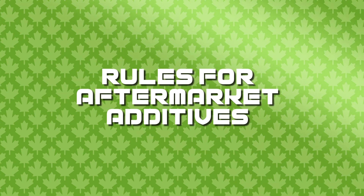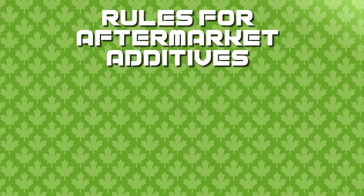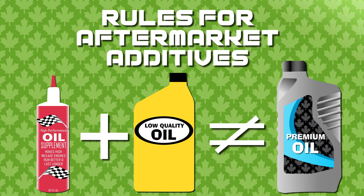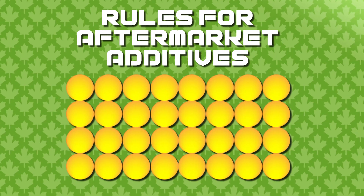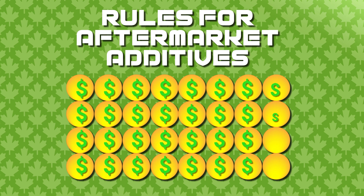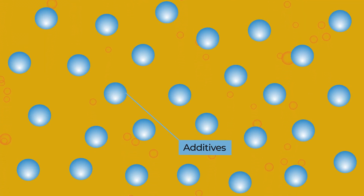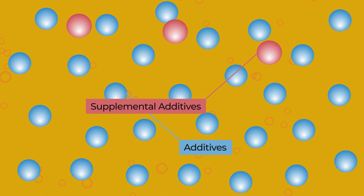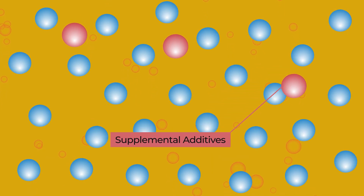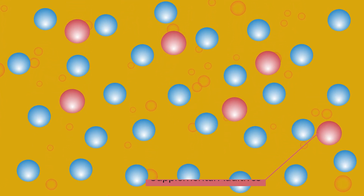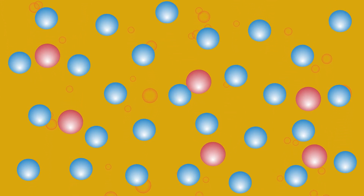Here are two general rules to remember when thinking about using aftermarket additives. First, a low-quality lubricant cannot be converted into a premium product simply by the inclusion of an additive. In the world of lubricants, you get what you pay for. This is part of the reason as to why synthetic oils are so expensive — they have been refined to such a high standard that they are some of the highest quality oils on the market. Secondly, base oils can only dissolve a certain number of additives. As a result, the addition of supplemental additives into an oil that has a low level of solubility, or is already saturated with other additives, may simply mean that the new additives will settle out of the solution and remain at the bottom of the crankcase or sump. It may never carry out its intended purpose.